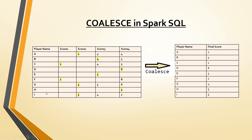For example, this is the dataset I am considering. It has columns like player name, score1, score2, score3, and score4. If you see player A, nothing is there in score1, meaning he doesn't have any score there, but he scored something in score2. We can consider these as game1, game2, game3, game4 — something like that. This is just a sample dataset.